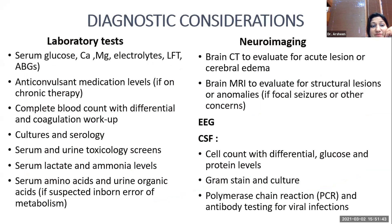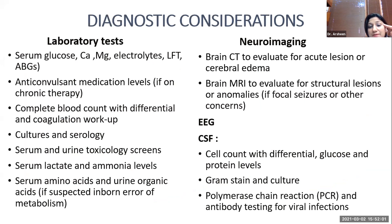Laboratory investigations include serum glucose, calcium, magnesium, electrolytes, LFTs, levels of anti-epileptic medications if already prescribed, complete blood counts for infective etiology, cultures if infection is suspected, and ABG. Neuroimaging: brain CT can evaluate for acute bleed or cerebral edema, and MRI brain for structural pathologies. EEG to assess seizure status and CSF analysis if meningitis or encephalitis is suspected.